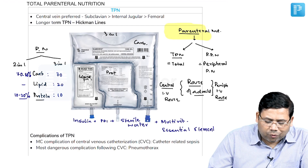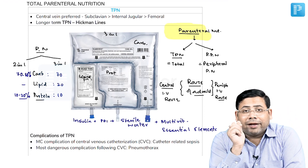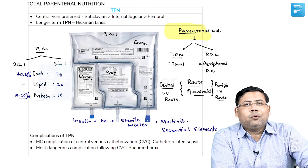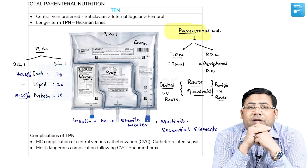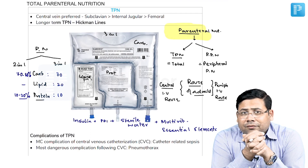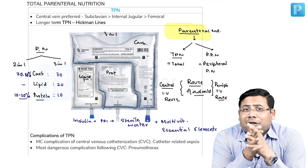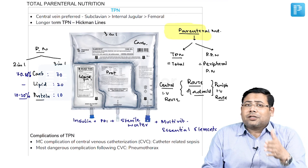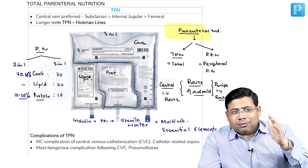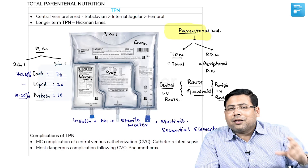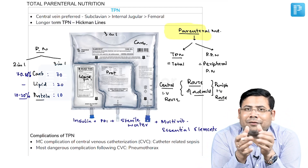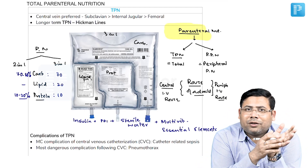An important concept about parenteral nutrition: why two-in-one versus three-in-one? This is the difference between developed and developing countries. Two-in-one does not contain lipids. The lipids — omega-3 from soya and omega-6 from fish — break down into arachidonic acid and icosapentaenoic acid. Arachidonic acid breaks down into prostaglandins, which fuel inflammation and prolong hospital stay. Insurance systems in developed countries prefer to avoid this burden.